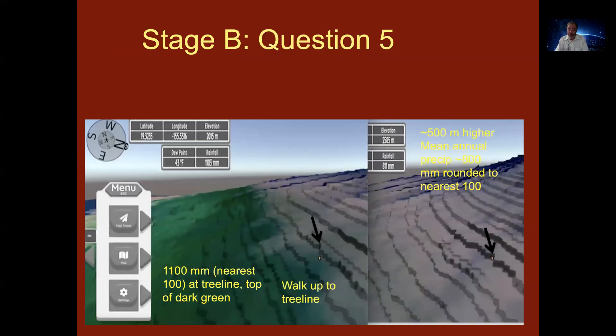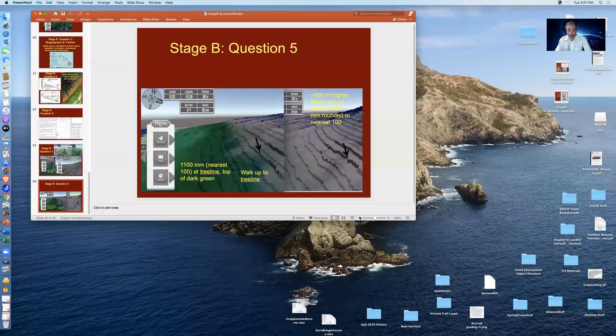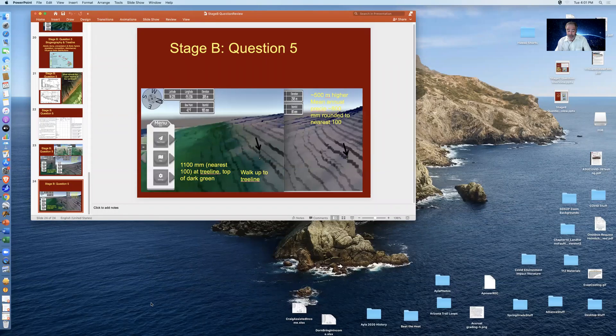So here's another example of what you're going to do. You get plopped at a lower location. You walk up to the tree line. You make your measurements in rainfall and elevation. Then you go above the tree line and you do the same thing. I hope that this presentation was helpful and that it makes it a little bit more efficient and you understand that this is science you're doing using real data from the satellites. I hope you have fun.